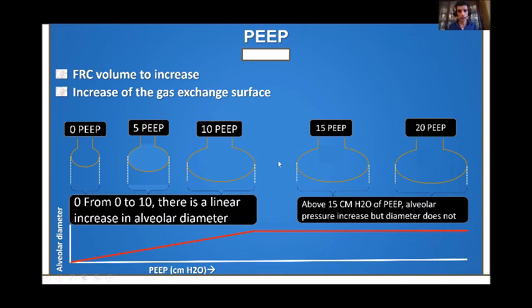You can see that at zero PEEP the alveoli collapse, at five there is good distension, more at 10, a little more at 15, but after that there is no further distension. The diameter increases until you reach a point where increasing PEEP no longer gives more alveolar distension or better perfusion. Therefore, the best PEEP would be somewhere around 14 to 15 centimeters of water.